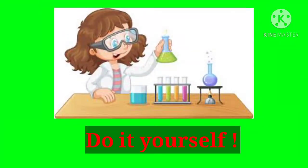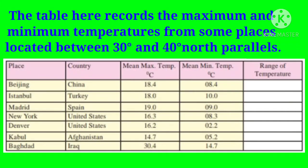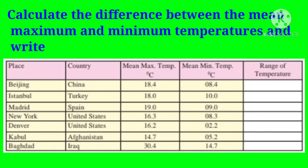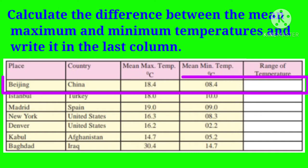Seychelles, Mauritius, and Maldives are some of these coastline-dependent countries. Now, do-it-yourself activity for students: here is a table which shows records of the maximum and minimum temperatures from some places located between 30 degrees and 40 degrees north parallels. Study the table and calculate the difference between the mean maximum and minimum temperatures and write it in the last column.